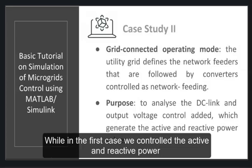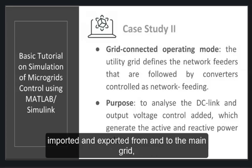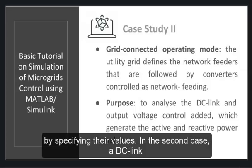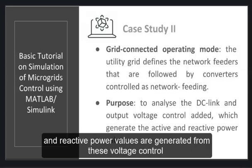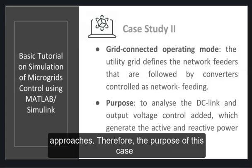While in the first case, we control the active and reactive power imported and exported from and to the main grid by specifying their values, in the second case, a DC link and an output voltage control are added, and the active and reactive power values are generated from this voltage control approach.